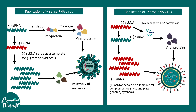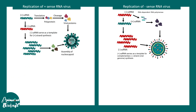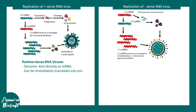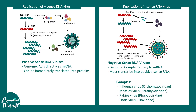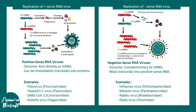The mRNAs produced with the help of RDRP form viral proteins, and the viral proteins and viral genomic material assemble to form a new viral particle. In summary: positive sense RNA genome can directly act as mRNA and be immediately translated; negative sense RNA genome is complementary to mRNA so it cannot be directly translated — it must be transcribed into positive sense RNA first. Examples of negative sense RNA viruses include influenza, measles, rabies, and Ebola; examples of positive sense RNA viruses include polio, hepatitis, and SARS-CoV-2.